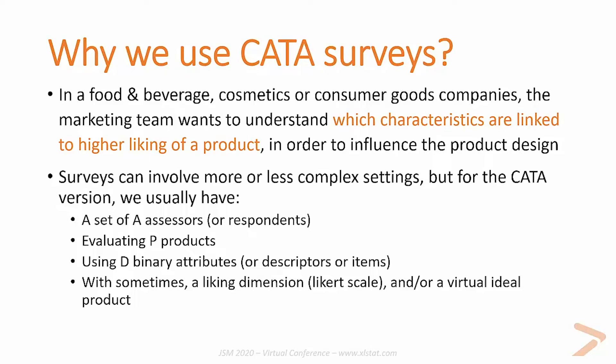CATA surveys usually involve a set of assessors — the more there are, the better it is. These assessors are evaluating multiple products, which can already be on the market, either your products or products from the competition, and some products you are currently designing. These products are evaluated using attributes, and the selection of these attributes is very important as it will have a significant impact on the decisions you make. It is also recommended to ask respondents to give a score on the products on a Likert scale from 1 to 5 or 0 to 10. You can also ask respondents to define what the ideal product characteristics would be.